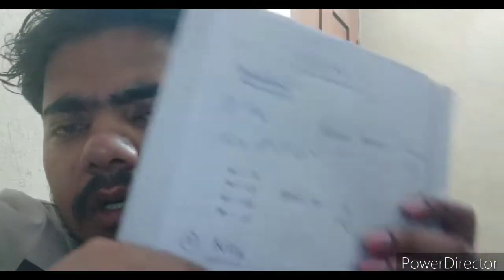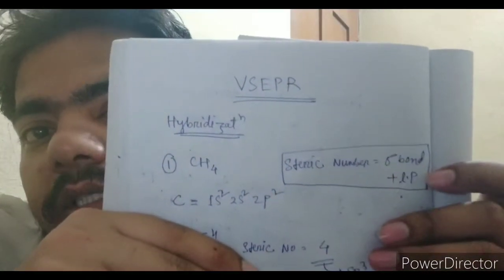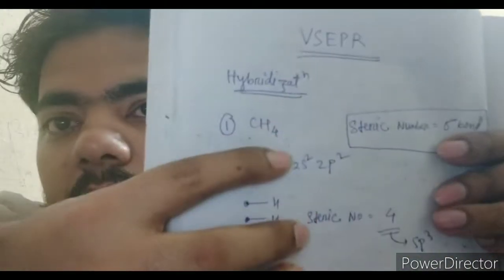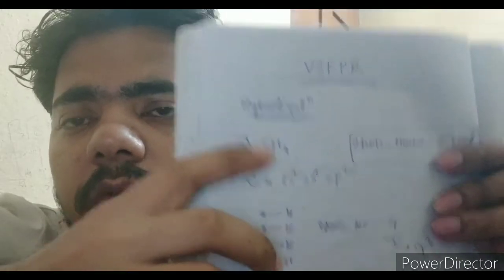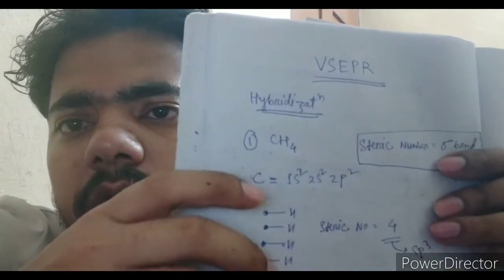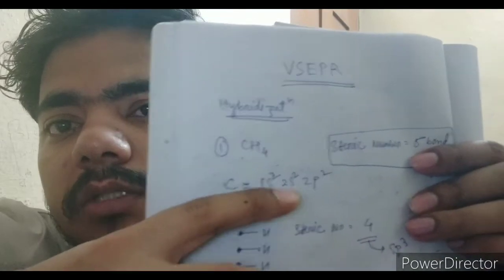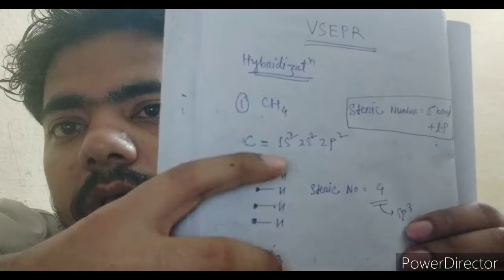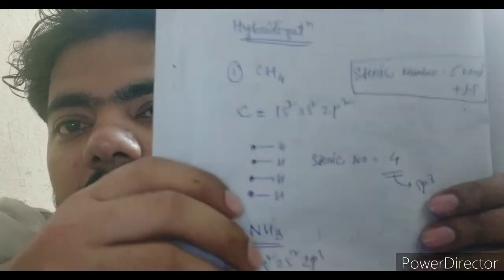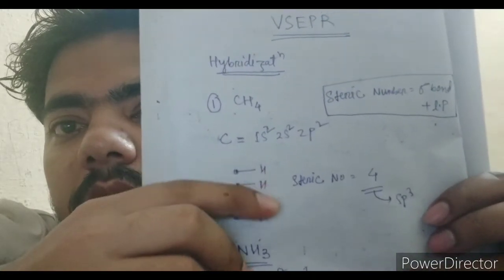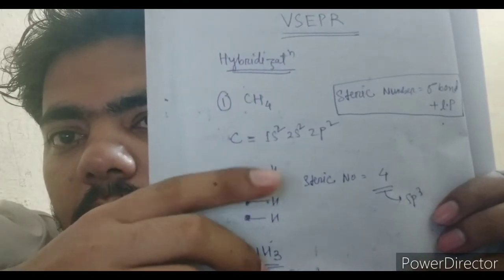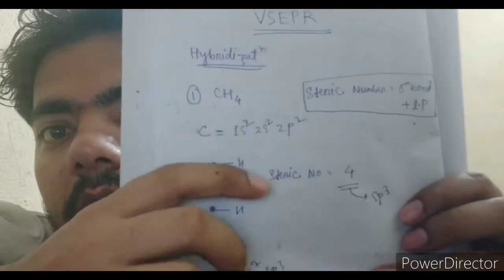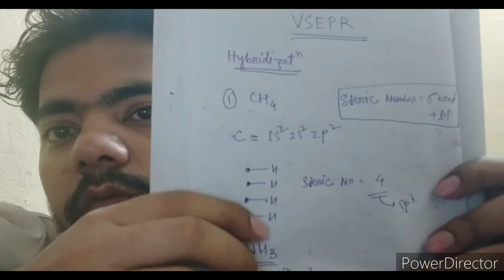Taking the first example: methane, CH4. To find hybridization, you should know how to find the steric number. The steric number is basically the sum of sigma bonds plus lone pairs present in that compound. Carbon is the central atom here. Carbon's electronic configuration is 1s2 2s2 2p2, giving it four valence electrons. These four electrons make one bond each with four hydrogen atoms — four sigma bonds. So the steric number is four, and no lone pair, so it is sp3 hybridization.